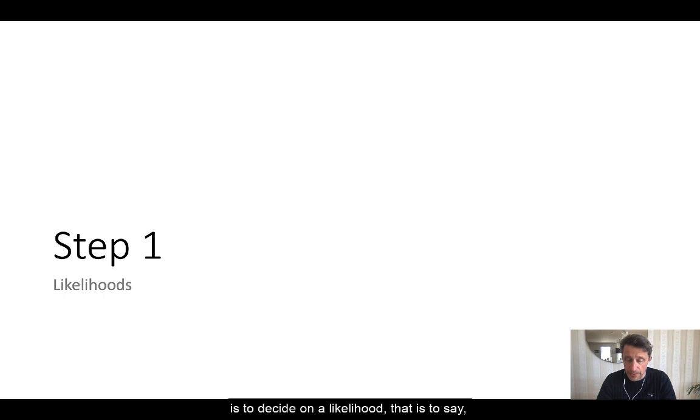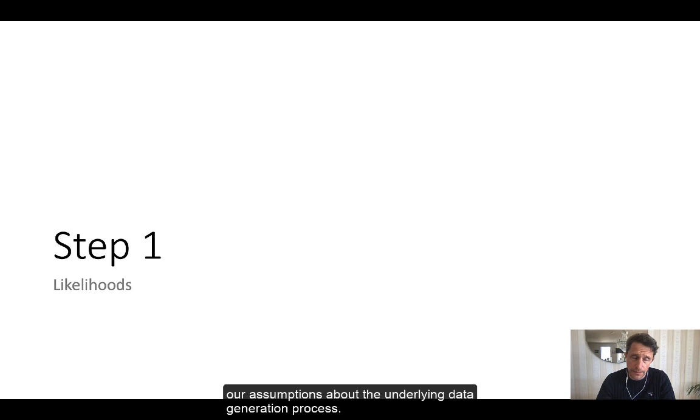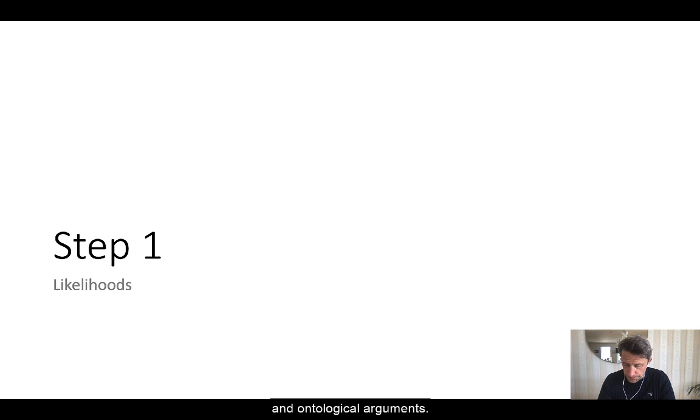So the first step we need to do is decide on a likelihood. That is to say, our assumptions about the underlying data generation process that generated the empirical data that we have collected. We ground our decisions when it comes to choosing a likelihood on epistemological and ontological arguments.